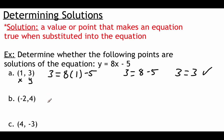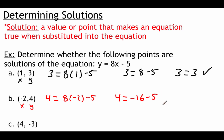Moving on to the next ordered pair, we plug in x equals negative 2 and y equals 4: 4 equals 8 times negative 2 minus 5. That gives us 4 equals negative 16 minus 5. Negative 16 minus 5 is negative 21, so 4 equals negative 21 — that doesn't make sense. So that one is not a solution.